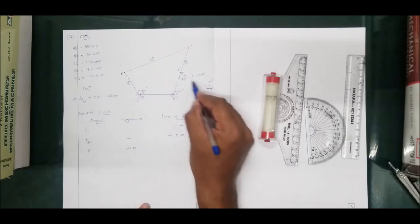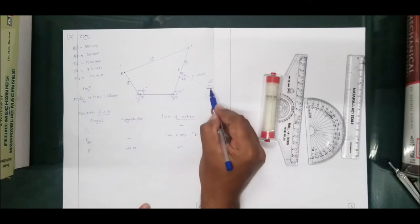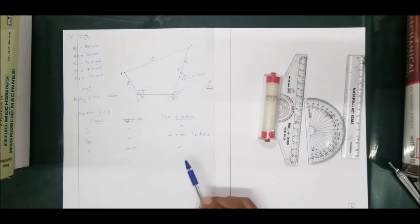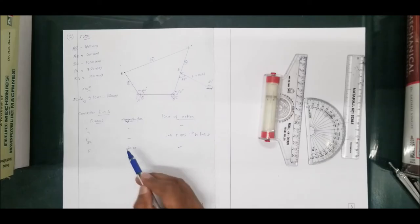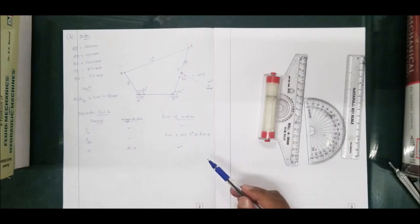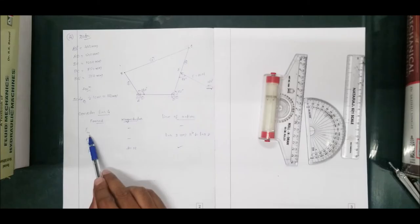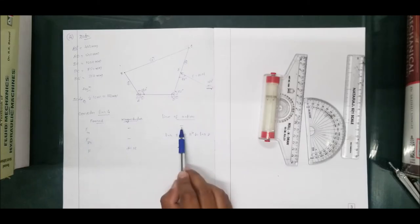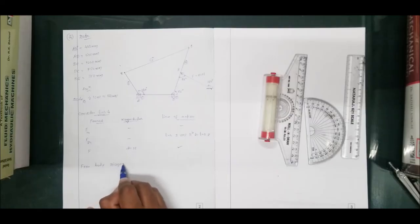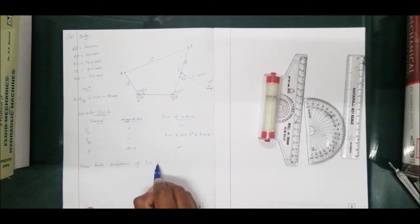We have three unknowns and link 4 is a three-force member. For a member acted upon by three forces, the first step is to draw the free body diagram to extract the unknown line of action. The line of action of F14 is not known, so I must draw the free body diagram of link 4.